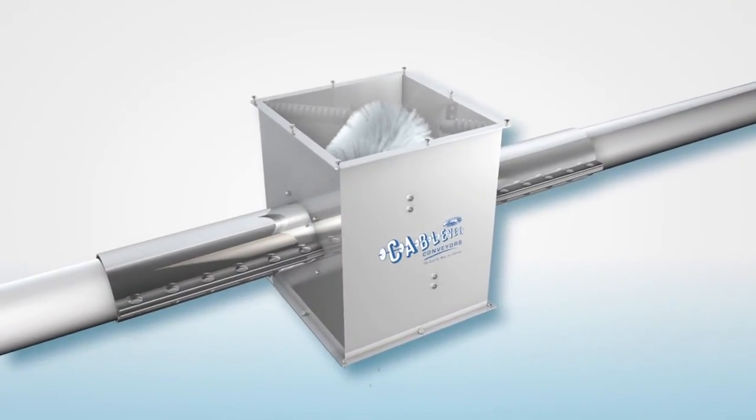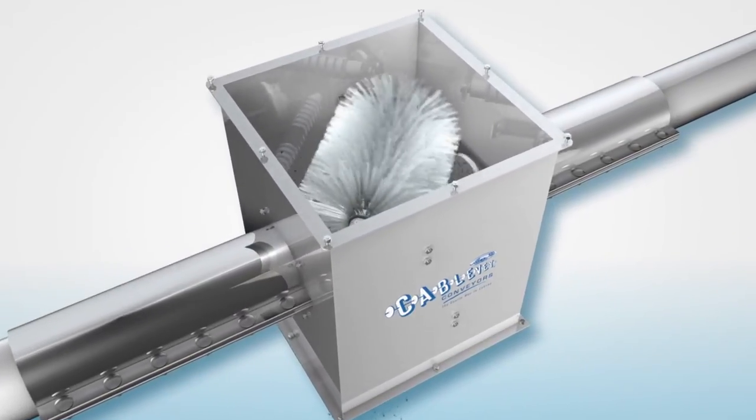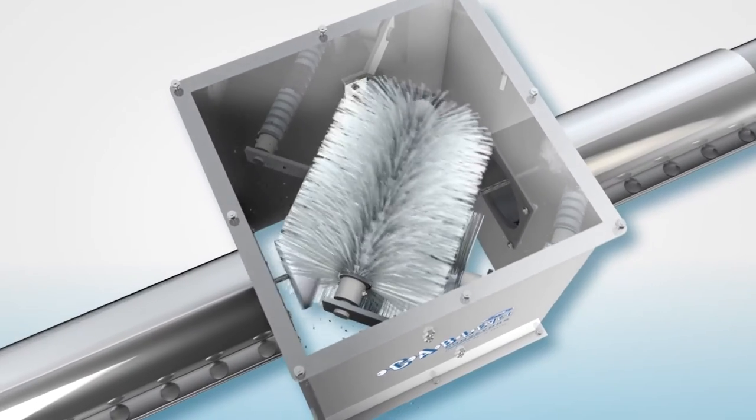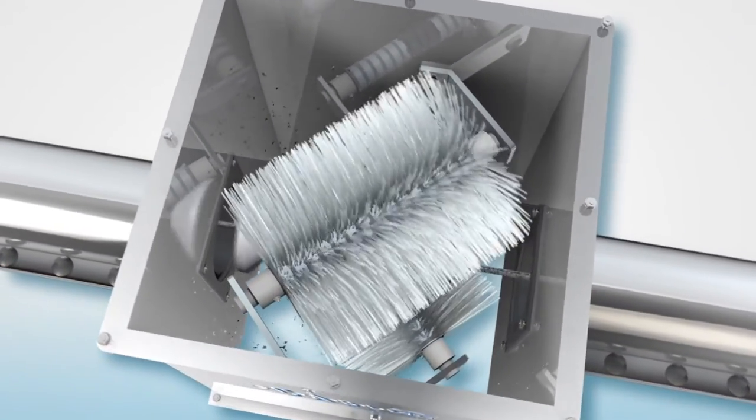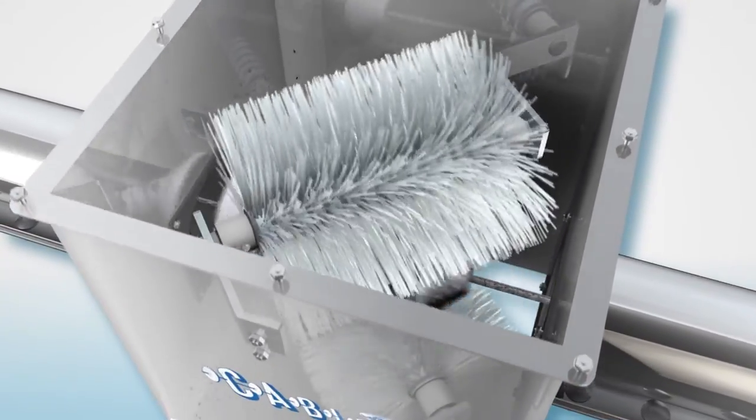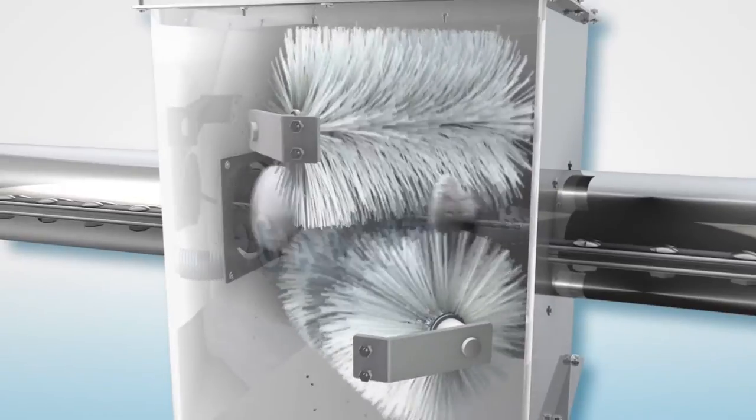We have developed a brush box system to clean the discs and cable. As the cable and discs move through the return, the discs and cable run in between the brushes, cleaning them with a hard poly bristle. Two spinning brushes knock debris off of the cable and discs each time around the conveyor system, self-powered by the discs passing through.